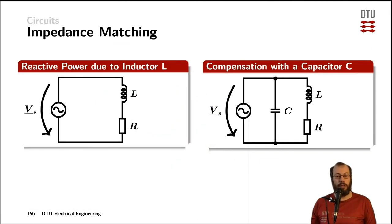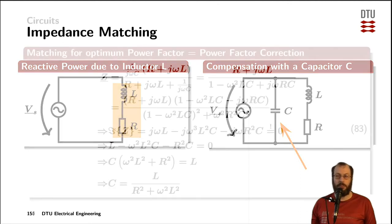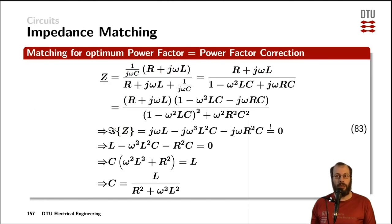For the optimized power factor, consider a circuit with a load impedance consisting of a load resistor and a load inductor. A capacitor can compensate for the inductor, placed here in parallel with the given load. The impedance loading the voltage source consists of the series connection of the resistor and the inductor impedance, those two being in parallel with the capacitor impedance. Multiplying through by the capacitor impedance eliminates the 1/(jωC) term in the numerator.